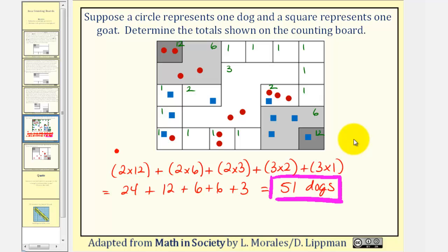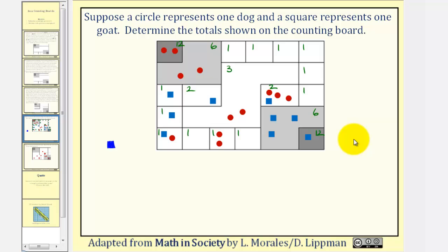Now, let's determine the value of the blue squares, which represents the number of goats. Again, let's start at the highest compartments, or the compartments worth the most. Here, we have one pebble worth twelve. So, one times twelve, plus, these three pebbles are worth six each, so we have three times six.